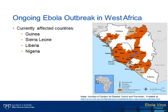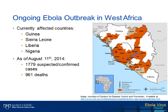As many of you are aware, the current Ebola virus outbreak in West Africa has affected four countries, including Guinea, Sierra Leone, Liberia, and most recently Nigeria. As of August 11th, there have been over 1,700 suspected or confirmed cases of Ebola hemorrhagic fever and 961 deaths attributed to the virus. Notably, this is the largest documented Ebola virus outbreak in Africa and the first one reported in West Africa.